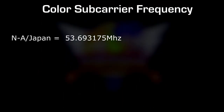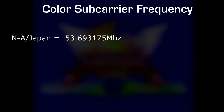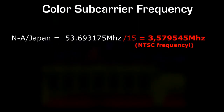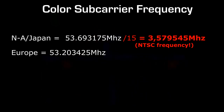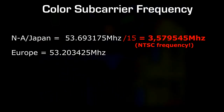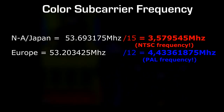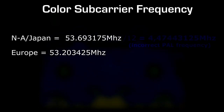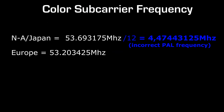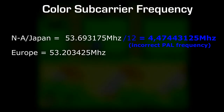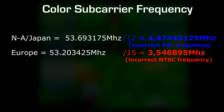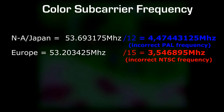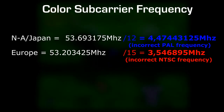On the Sega Genesis, those frequencies are derived from the main clock. In North America and Japan, the main frequency is 53.693175 MHz, and a divider is applied resulting in a 3.579545 MHz signal. In Europe, the main frequency is 53.203425 MHz, but with a divider of 12, resulting in 4.43361875 MHz. But when you mod the console to switch between region and video signal, you also change the divider. So if you have a Genesis and switch to PAL, its main frequency is divided by 12, resulting in a 4.47443125 MHz signal. If you have a Mega Drive and switch to NTSC, its main frequency is divided by 15, resulting in 3.546895 MHz. Neither of them will be recognized as a proper color subcarrier frequency by the TV, resulting in a black and white image.